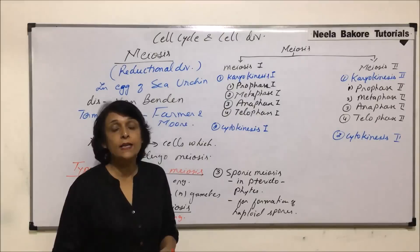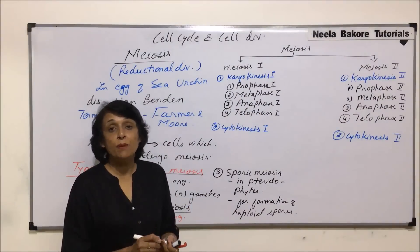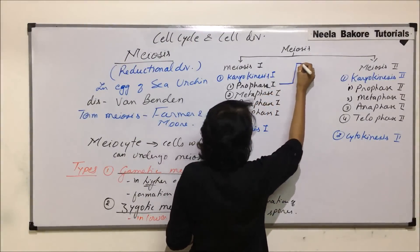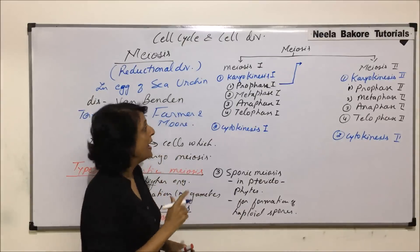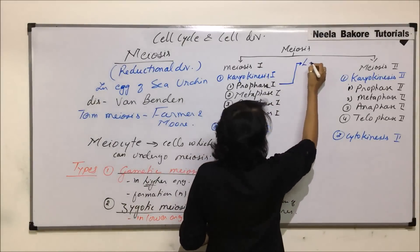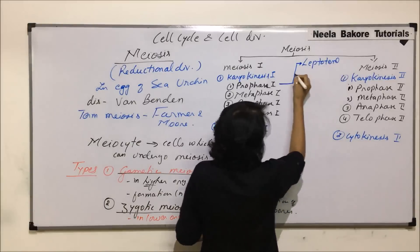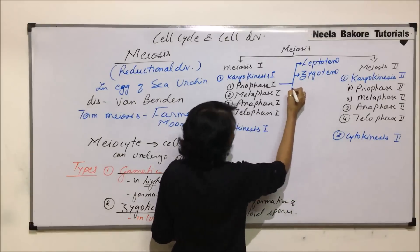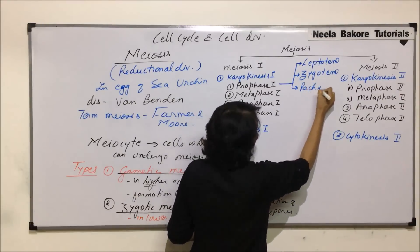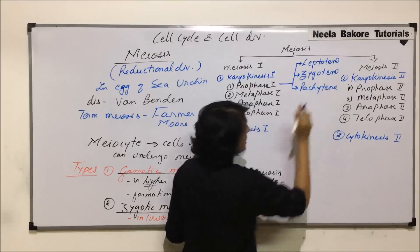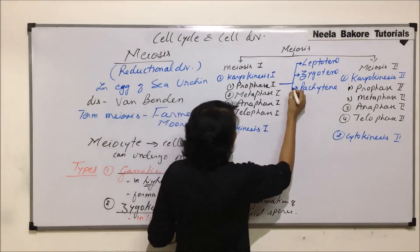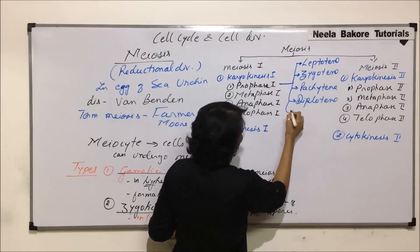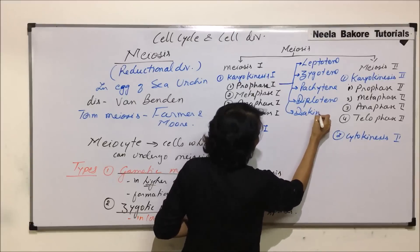Prophase I is a very long phase and it gets completed in five sub-phases. These are known as leptotene, zygotene, pachytene, diplotene, and diakinesis.